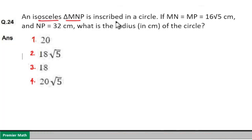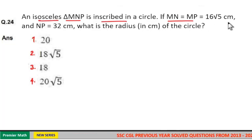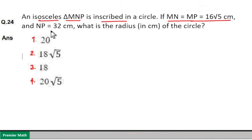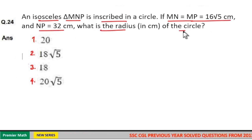An isosceles triangle MNP is inscribed in a circle. If MN is equal to MP is equal to 16 root 5, and NP is equal to 32, what is the radius of this circle?